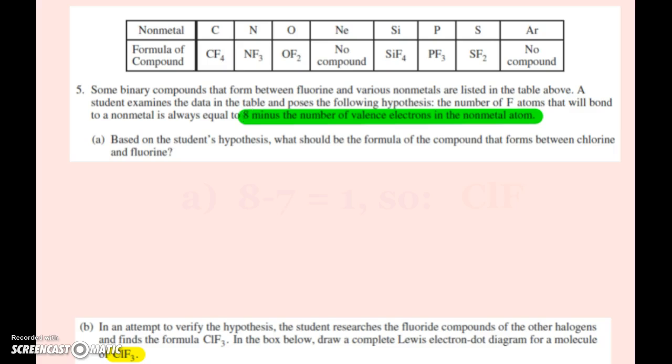Based on this hypothesis, what should the formula of the compound that forms between chlorine and fluorine? I need to follow his hypothesis: eight minus the number of valence electrons. Chlorine has seven, eight minus seven is one, so CLF should be the formula of the compound.